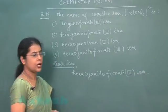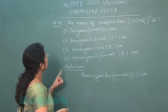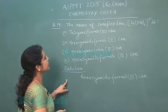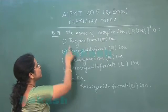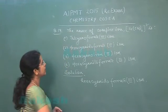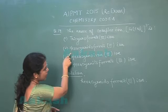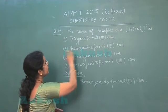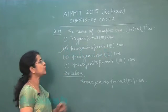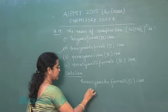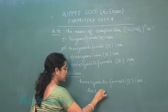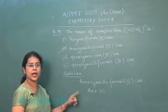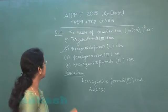Now let us check the options. The first option is tricyanoferrate - there are six cyanide so this won't be the correct answer. Second one is hexacyanidoferrate(III). It means correct option is the second one. So second option is the correct answer of the question.